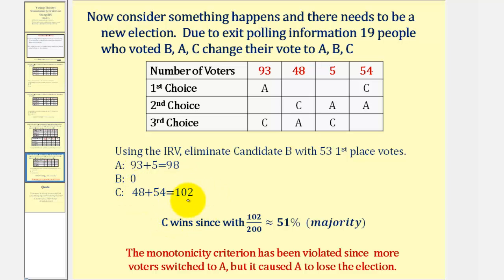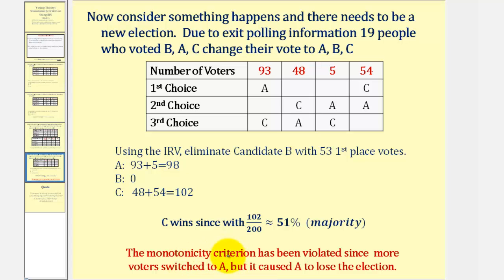Notice how now candidate C actually has a majority at 51 percent of the votes. So in this case, the monotonicity criterion has been violated, since more voters switched to candidate A but this caused A to lose the election. This does not mean that every time we apply instant runoff voting the monotonicity criterion is violated, but this is something we'd have to watch out for if we're using this method to select a winner.